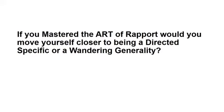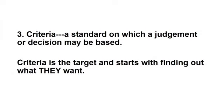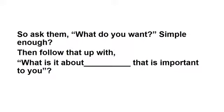If you mastered the art of rapport, would you move closer to being a directed specific or a wandering generality? Criteria — a standard on which a judgment or decision may be based. Criteria is the target and starts with finding out what they want. Ask them: what do you want? Then follow that up with: what is it about that that is important to you?